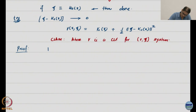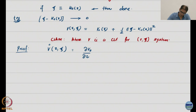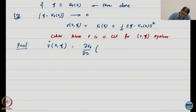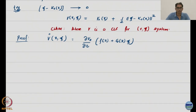I will compute V̇(x, ξ). This is the partial of V₀ with respect to x, and I take the derivative piece by piece. I get ∂V₀/∂x times (f(x) + G(x)ξ), which is ẋ. There is no partial of V₀ with respect to ξ because V₀ is independent of ξ — so that term is done.